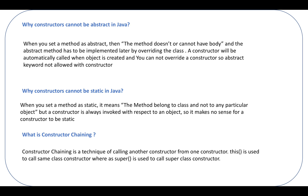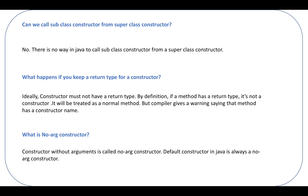What is constructor chaining? Constructor chaining is a technique of calling one constructor from another constructor. This is used with this() to call the same class constructor, and super() is used to call the superclass or parent class constructor. Can we call a subclass constructor from a superclass constructor? No, there is no way in Java to call a subclass constructor from a superclass constructor.